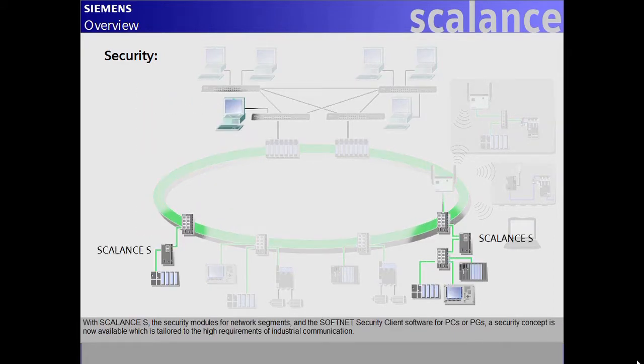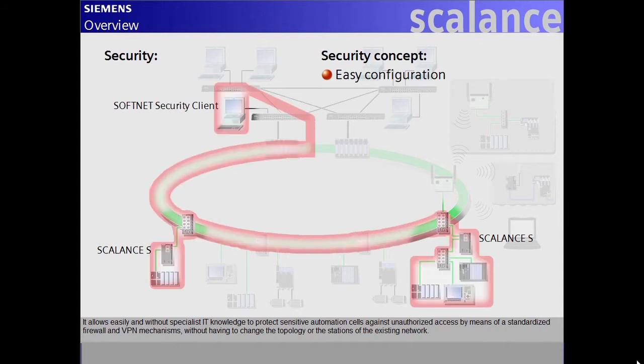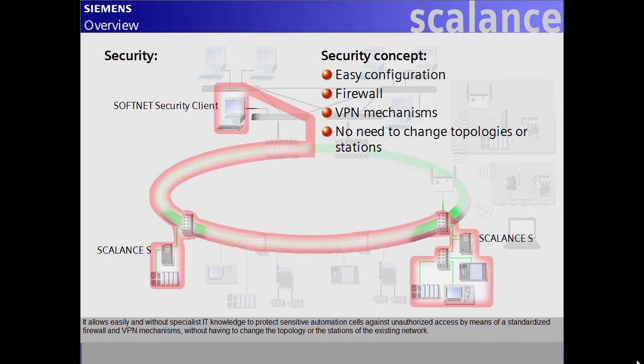With Scalance S, the security modules for network segments, and the softnet security client software for PCs or PGs, a security concept is now available which is tailored to the high requirements of industrial communication. It allows easily and without specialist IT knowledge to protect sensitive automation cells against unauthorized access by means of a standardized firewall and VPN mechanisms without having to change the topology or the stations of the existing network.